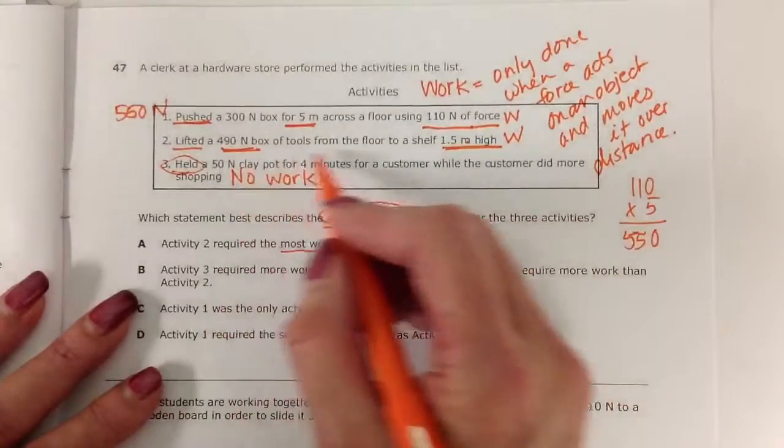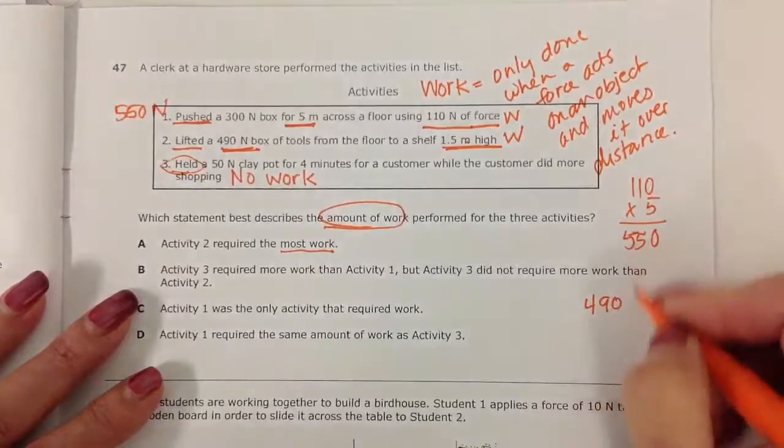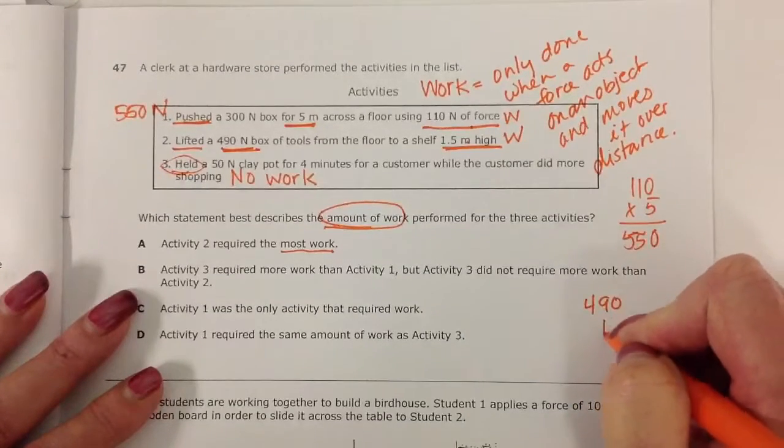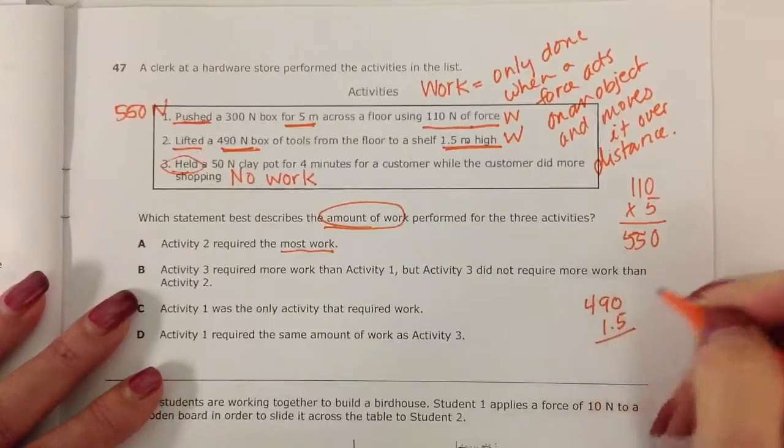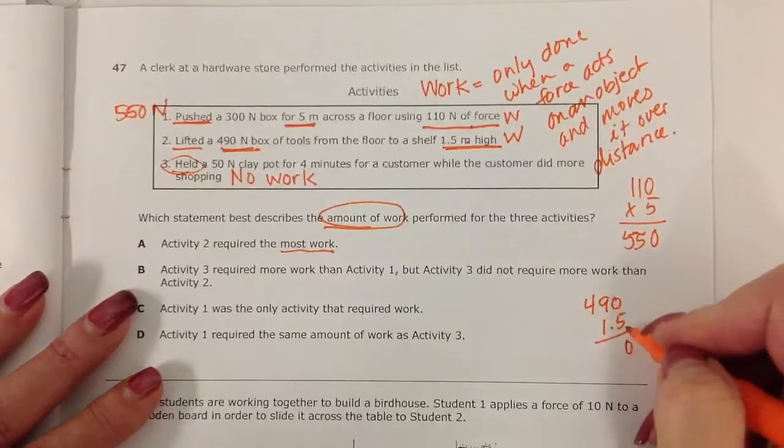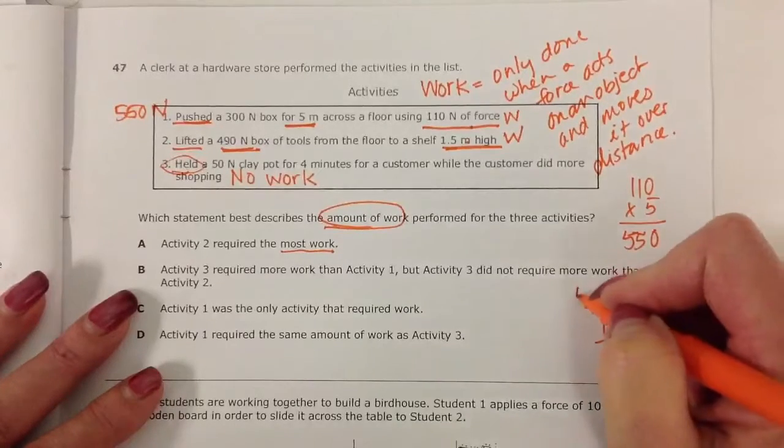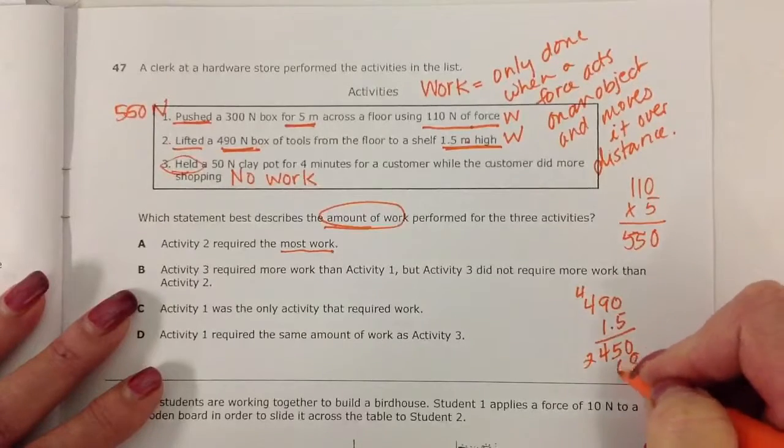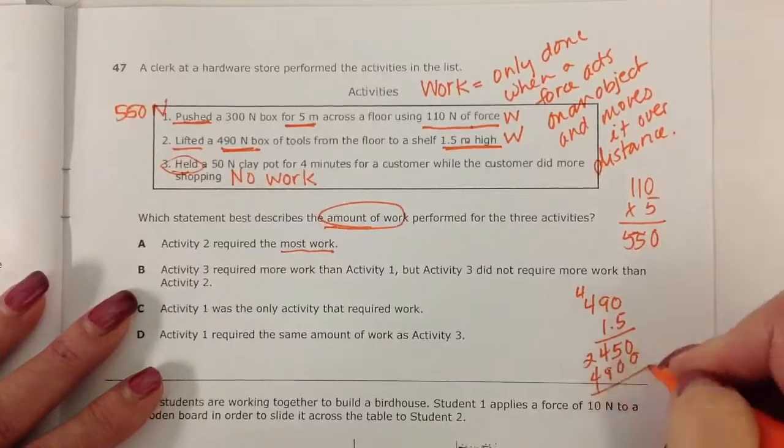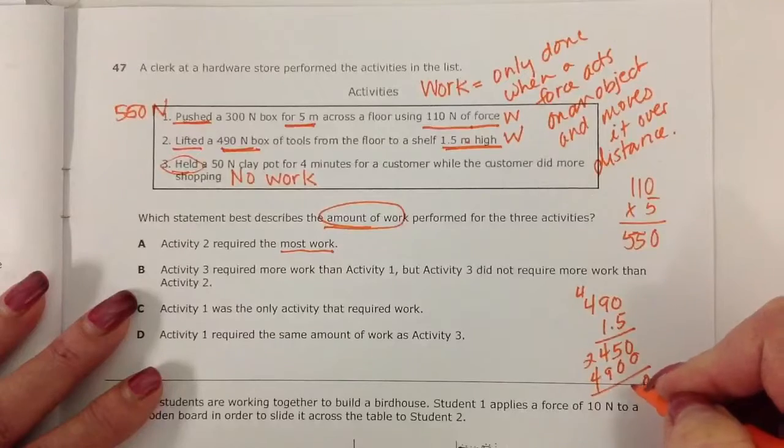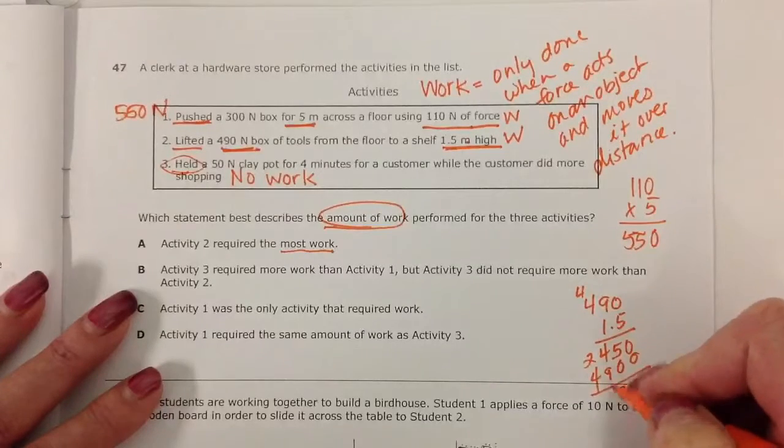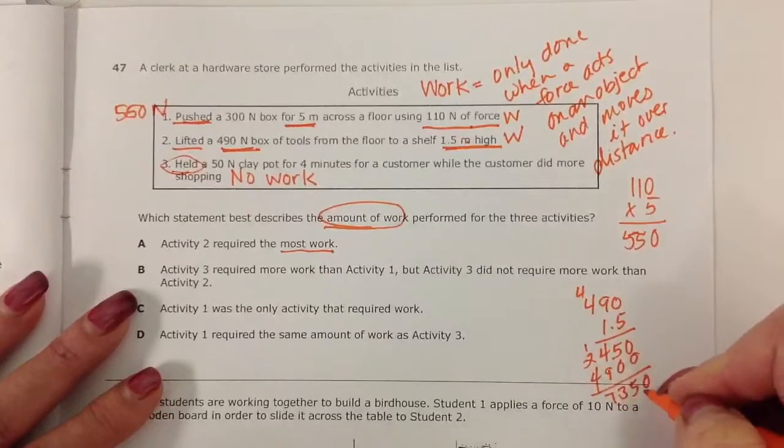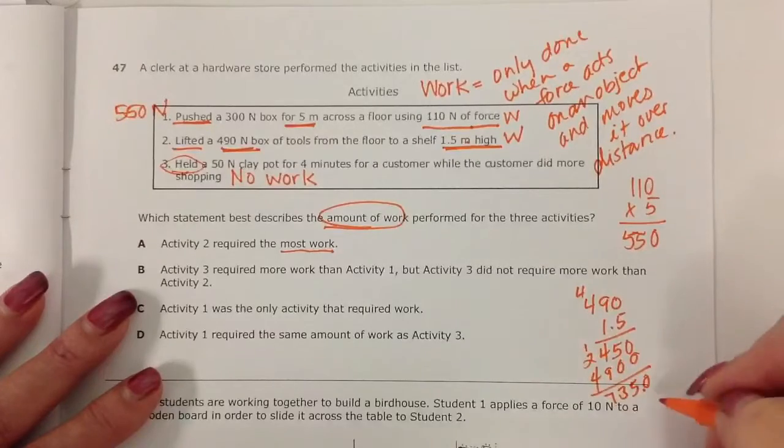Number two, I have 490 newtons of force being used, and the object is being moved 1.5 meters up. I'm just going to go ahead and calculate that out. That would be 735.